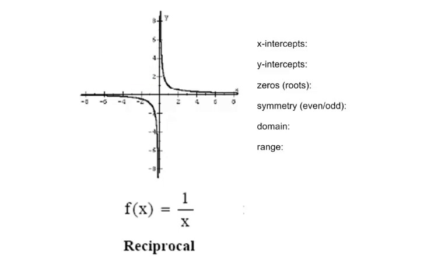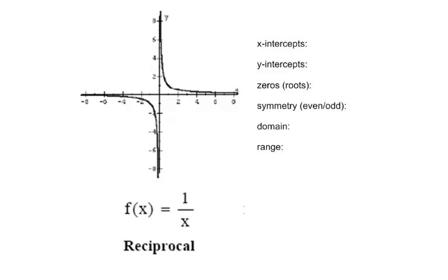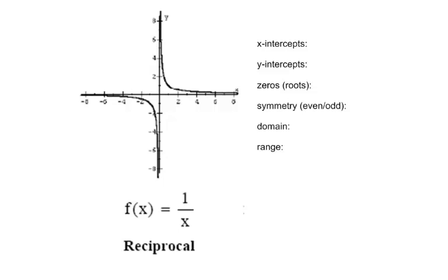We can see this on the graph: 1 over a super tiny x value, very close to the right side of the y-axis, gives really large output values. As we put in bigger values of x, the bigger x gets, the smaller y values get — 1 over 10,000 is a tiny number. And the smaller x gets, the bigger y gets. The same behavior occurs to the left of the y-axis, but for negative input values, giving corresponding negative output values.